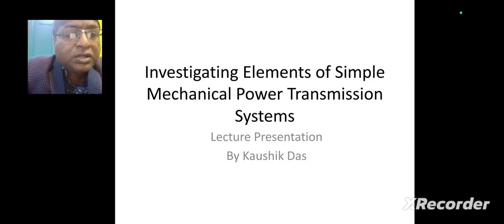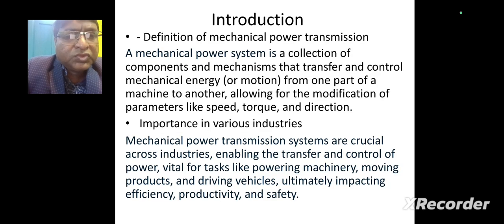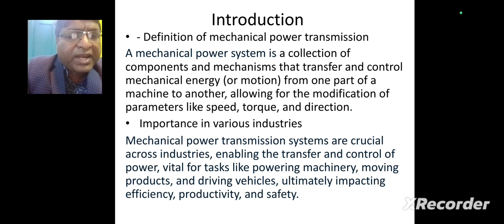Dear student, today I am going to discuss the topic: investigating elements of simple mechanical power transmitting systems. A mechanical power system is a collection of components and mechanisms that transfer and control mechanical energy or motion from one part of a machine to another, allowing for the modification of parameters like speed, torque, and direction.